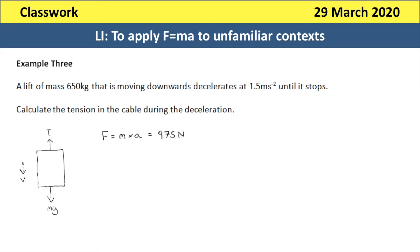I can work out the resultant force on the lift by doing mass times acceleration — in this case deceleration. So the tension minus the weight is going to equal the resultant force, which is 975 newtons. So T minus mg equals 975. I know the mass of the elevator, so I can work out the tension by doing 975 plus the weight, the weight being 650 times 9.81, and that gives a final answer for the tension in the cable of 7,345 newtons.